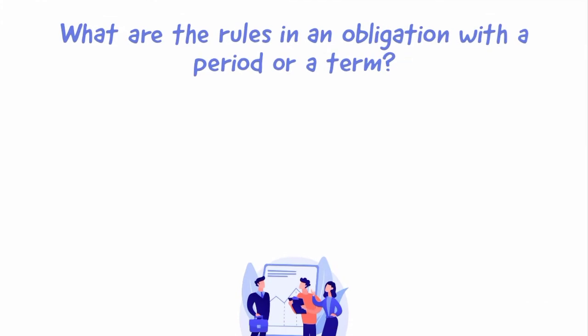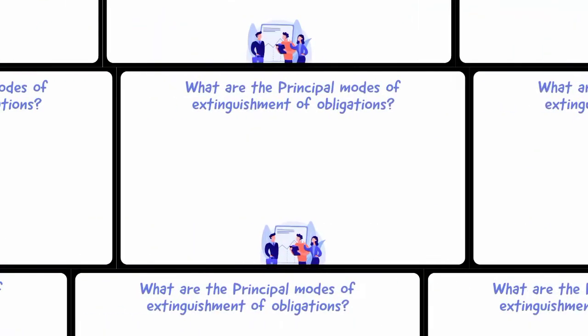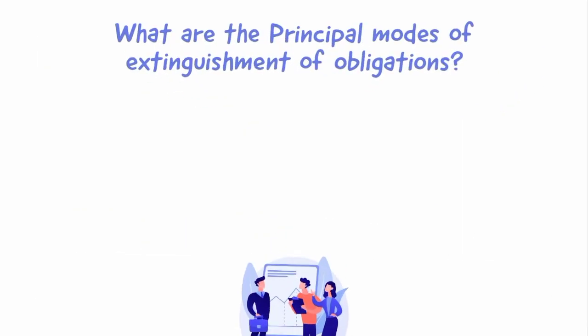What are the rules in an obligation with a period or a term? General rule: whenever in an obligation a period is designated, it is presumed to have been established for the benefit of both the creditor and the debtor. Exception: when it appears from the tenor of the period or other circumstances that it was established for the benefit of one of the parties.